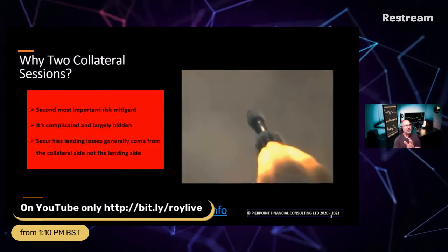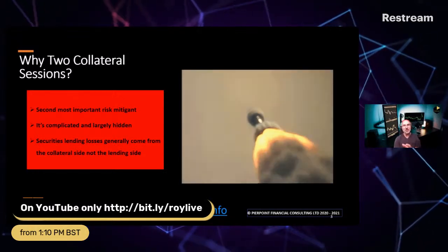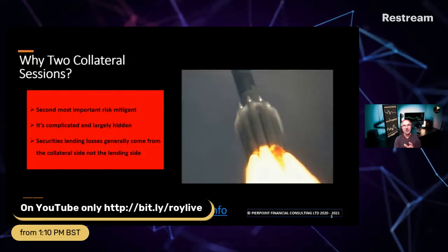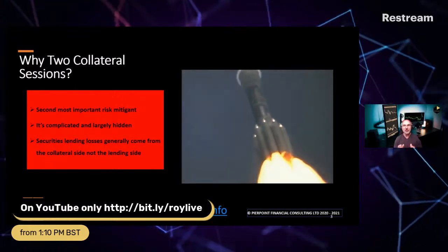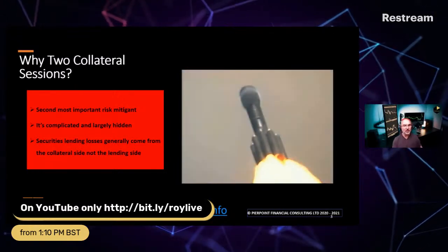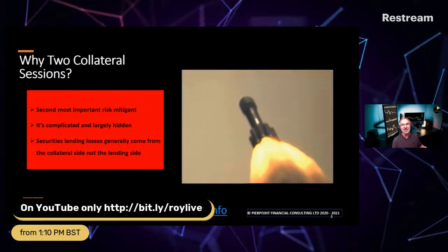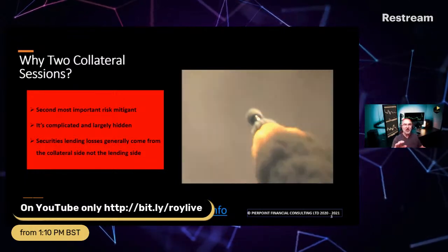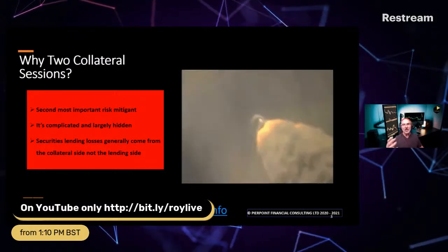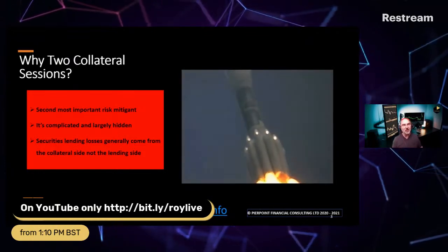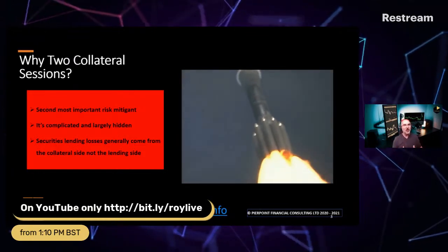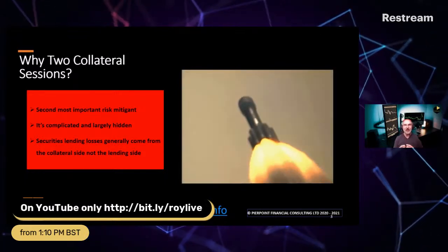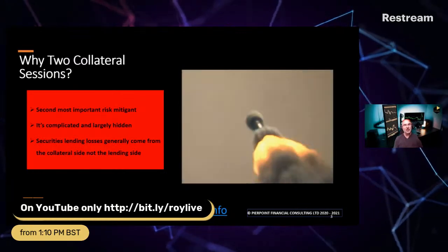Fundamentally, the reason this is critical for everyone to understand is that most of the losses that have arisen from securities lending businesses are as a result of problems on the collateral side, not on the securities lending side as such. It's been an issue with either what can be done with the collateral, what was done with it, or what wasn't done with it. We'll talk about the risk side of things next week; today we want to get a firm grounding on collateral itself.